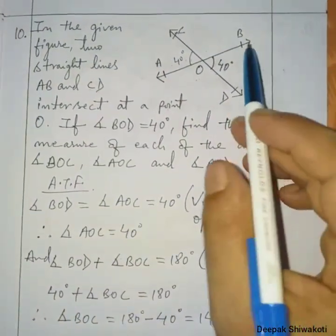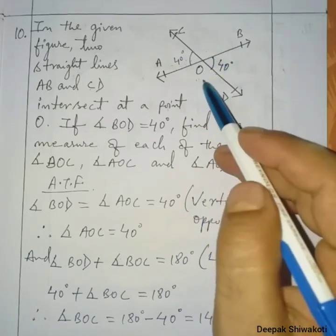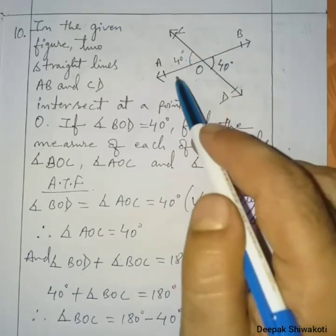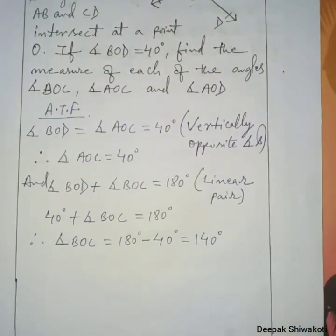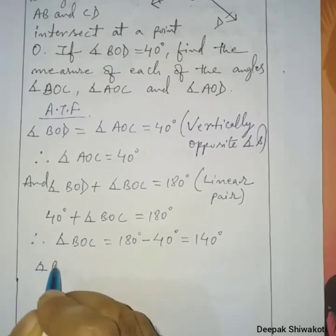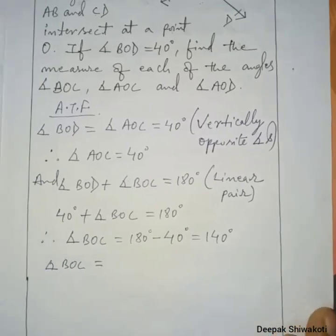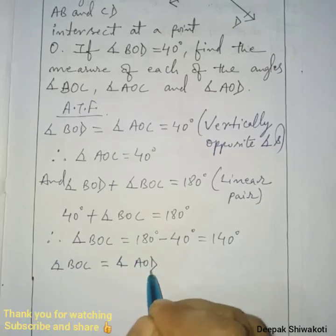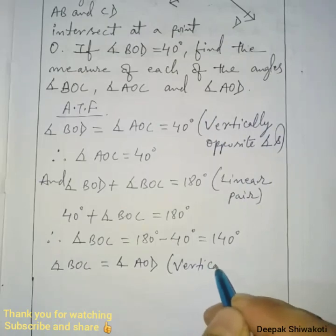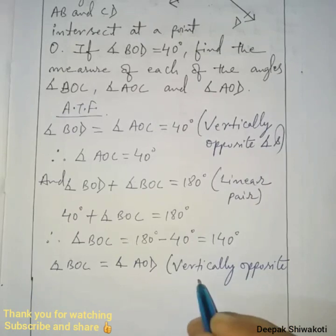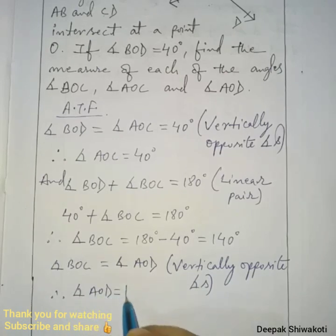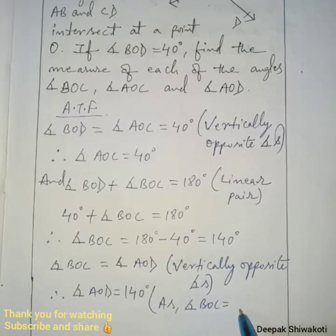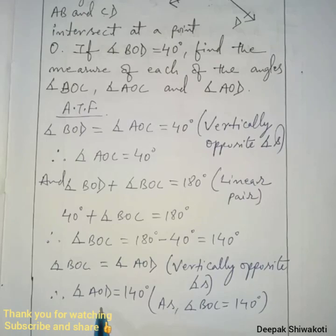Angle BOC and angle AOD are vertically opposite angles, so they are equal. Therefore angle AOD equals 140 degrees. We have now found all the required angles: AOC equals 40 degrees, BOC equals 140 degrees, and AOD equals 140 degrees.